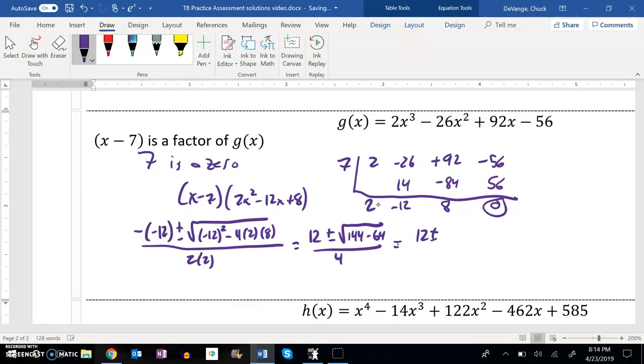So let's see. 12 plus or minus, that's an 80, square root of 80 over 4. So that 80, I'm going to break it down a little bit. I'm going to do as much of the square rooting of that 80 as I can. So I know that 80 is 16 times 5. So those are still square rooted.